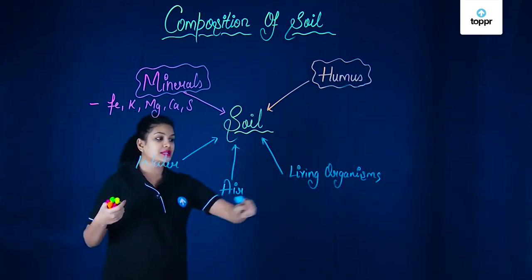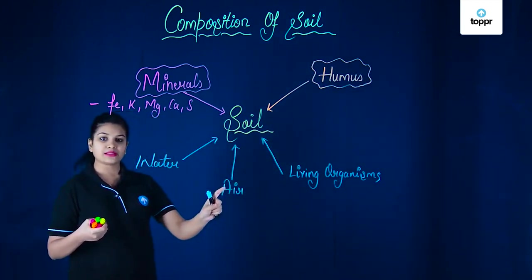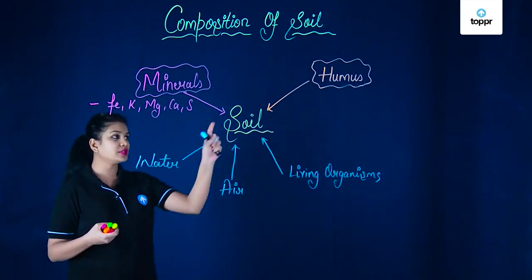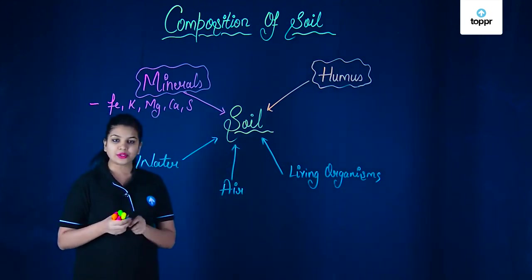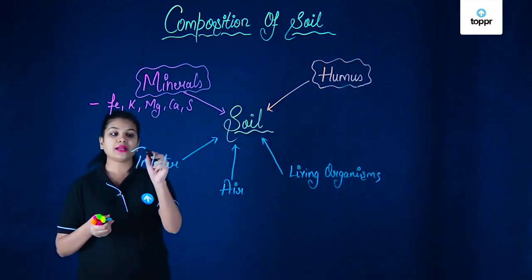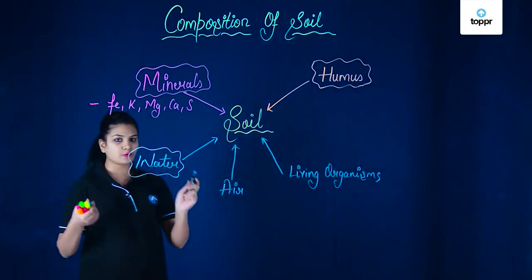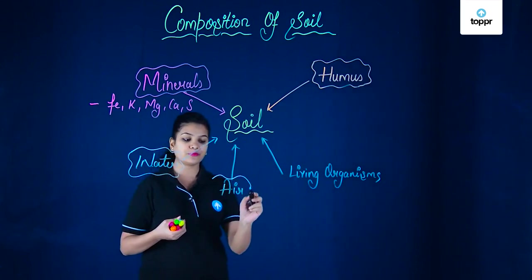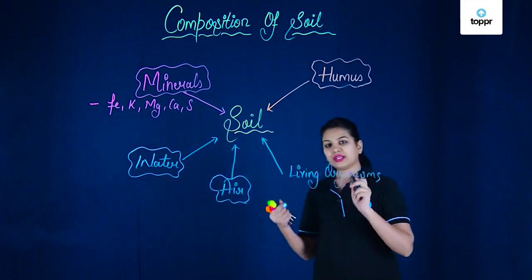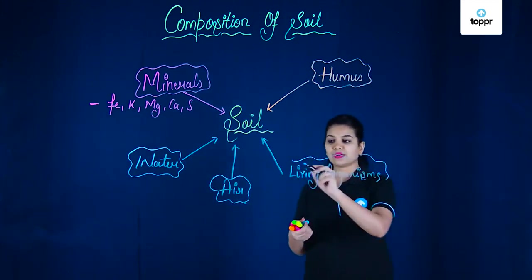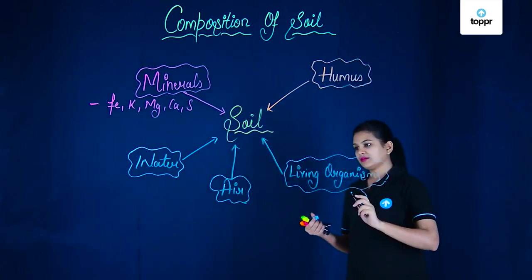Well these decomposers are the living organisms which are found in the soil and these living organisms they require water and air to perform this process of decomposition. So water and air of course it is primarily required by the plant to perform respiration and also the water is required for the process of photosynthesis for the plants to make their own food. But besides that the water and air is very important by these living organisms as well as they perform the process of decomposition and in the formation of humus.